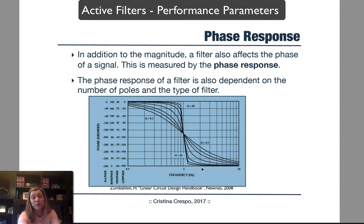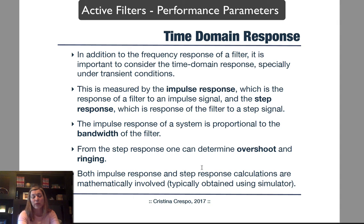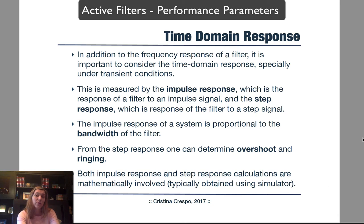In addition to the frequency response, we can also characterize a filter based on its time-domain response. There are two particular responses: one is the impulse response, and the other is the step response. The impulse response is the response of the filter to an impulse signal, defined as a very narrow pulse that is infinitely high, infinitely narrow, and covers a unity area. It's impossible to generate a perfect impulse, but if you generate something as close as possible to an impulse, the output is the impulse response.